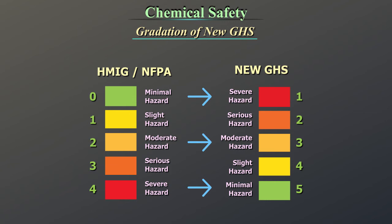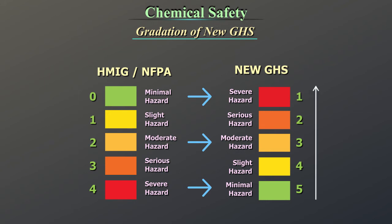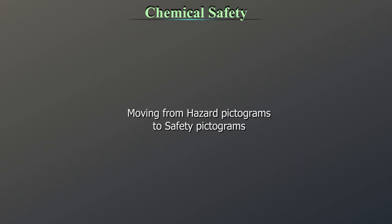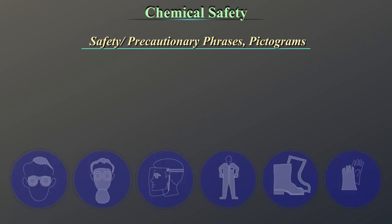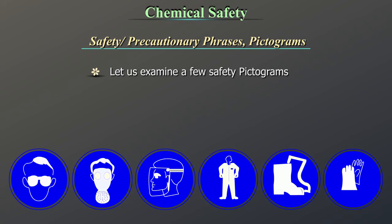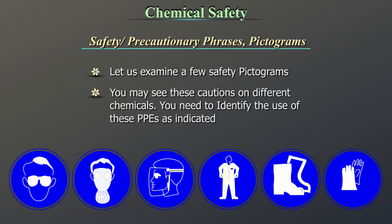Gradation of the new GHS: The new GHS differs in its gradations from HMIG and NFPA. When HMIG and NFPA classify green to red as 0 to 4, GHS classifies it in the other direction — green to red is 5 to 1. Moving from hazard pictograms to safety pictograms: let us examine a few safety pictograms. You may see these cautions on different chemicals, and you need to identify the use of these PPEs as indicated.